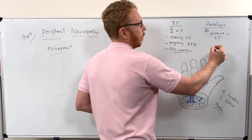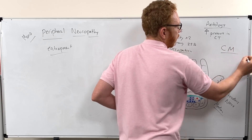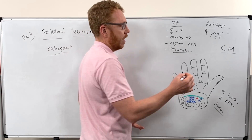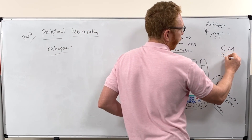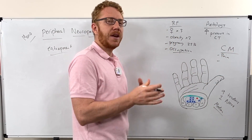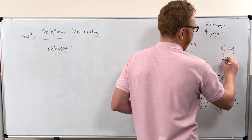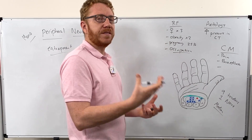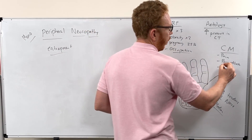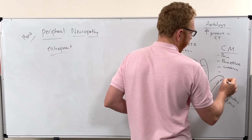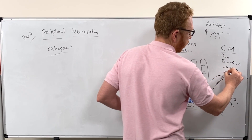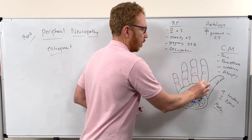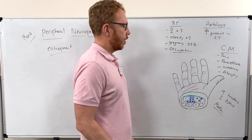Now for the clinical manifestations — the signs and symptoms. When we compress and entrap the median nerve, it's probably going to cause pain, which is very common. It's also going to cause paresthesia — numbness and pins and needles. In a more severe state, you're going to get weakness. And then, looking at the thenar group, you might see atrophy — a reduction in the bulk of the musculature in that part of the hand.